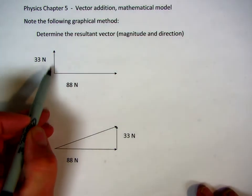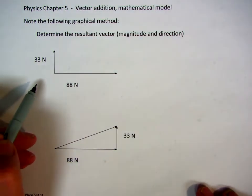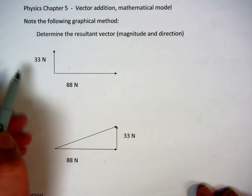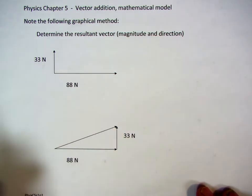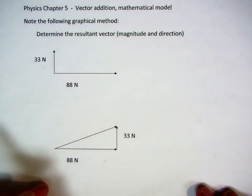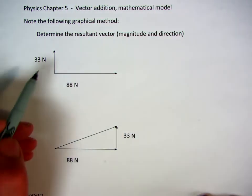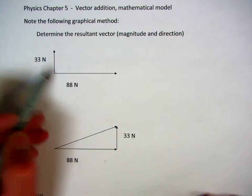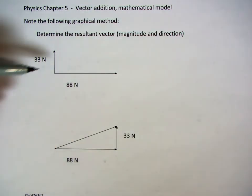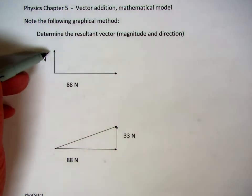If I have two vectors, this one here is acting at 33 newtons directly up, and I have another vector that's 88 newtons acting to the right. You remember that when we introduced addition of vectors, we really need to move either this vector over here or that vector.